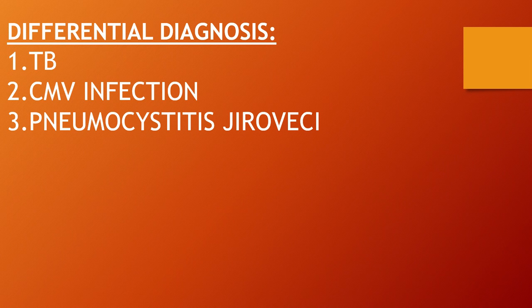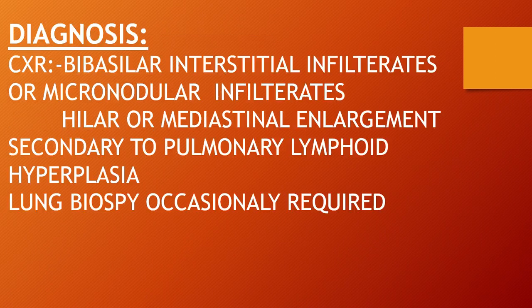The differential diagnosis includes everything that forms interstitial infiltrates in the lungs — that can be TB, CMV infection, or pneumocystis. For diagnosis, on X-ray there are bibasilar interstitial infiltrates or micronodular infiltrates.